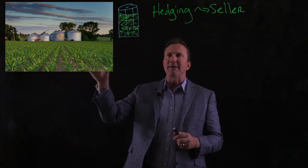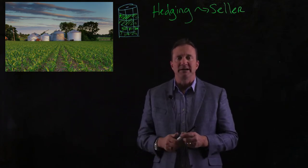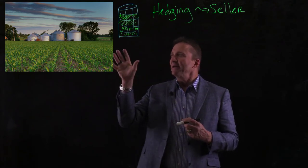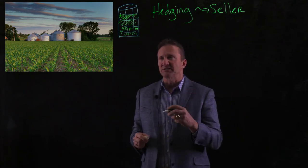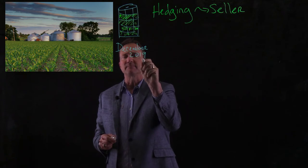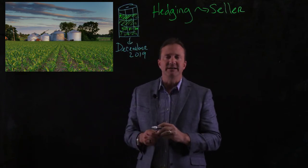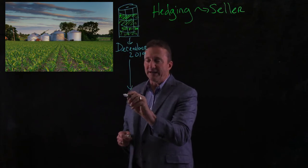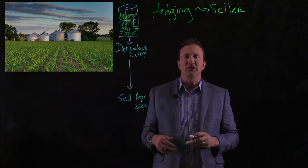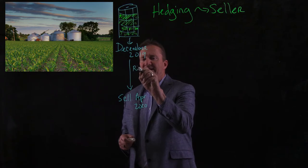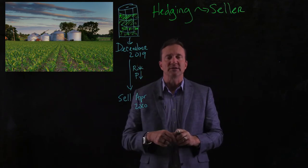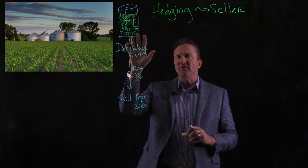I have a corn crop — 50,000 bushels in the bin. We need to understand the time period involved. Today we'll act as if it is December 2019, and this corn in the bin is going to be sold in April 2020. My risk as a seller of corn during this time is that the price would fall — that's my concern.